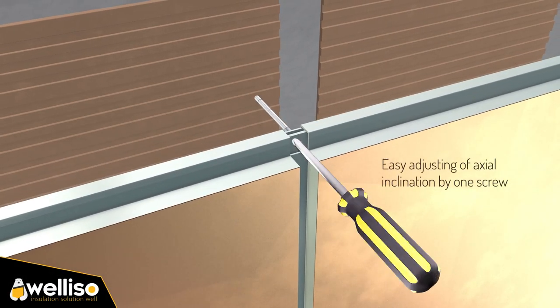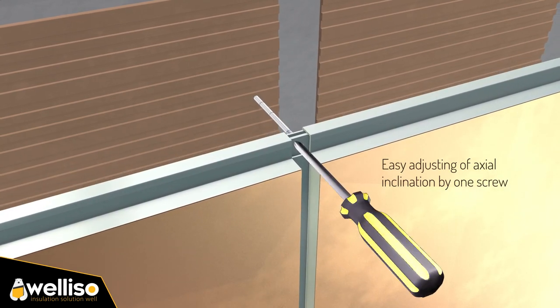Axis adjustment can be done by moving the panels back and forth with a screwdriver.